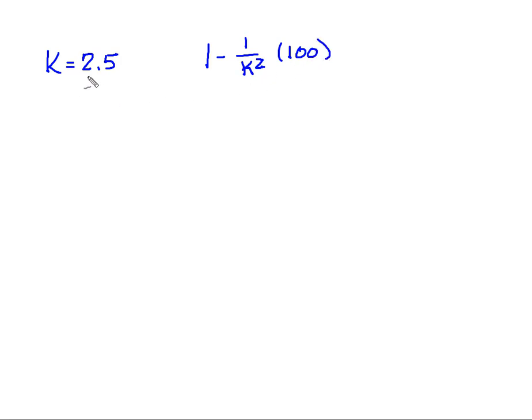Now I'm simply going to substitute in 2.5 for K, and I get 1 minus 1 over 2.5 squared times 100, which is going to give me 1 minus 1 over 6.25 times 100.